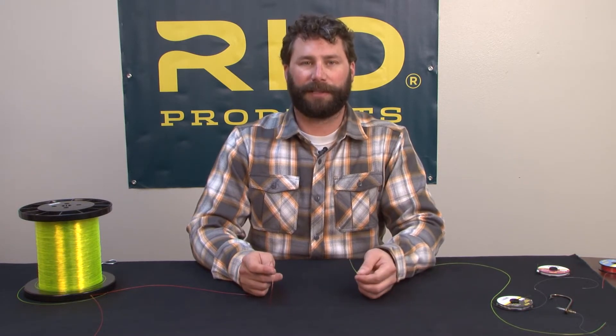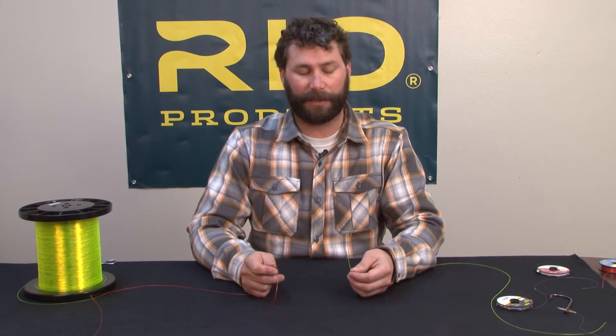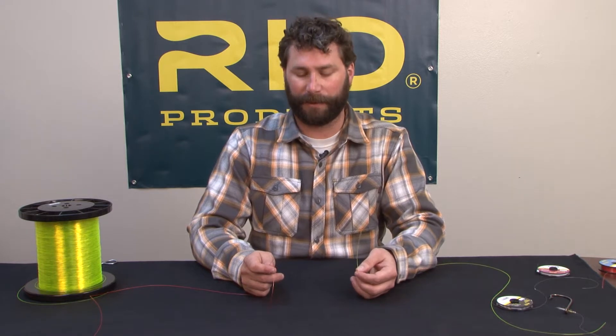One of my favorites is the improved blood knot. It's a fantastic knot for attaching two dissimilar pieces of monofilament together. It's great if you're constructing a saltwater leader and you're trying to put a class tippet in it.